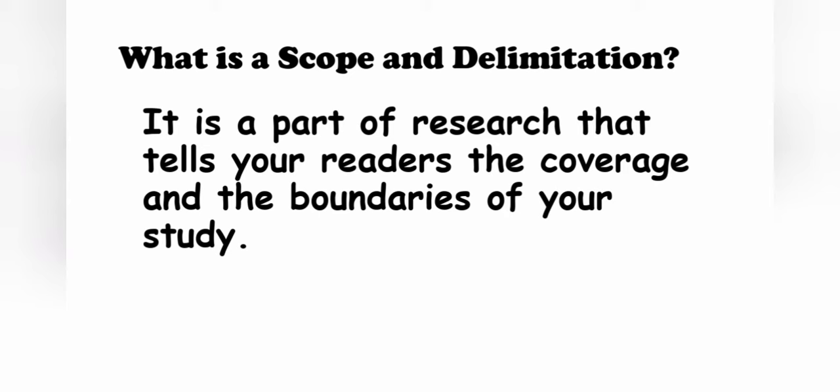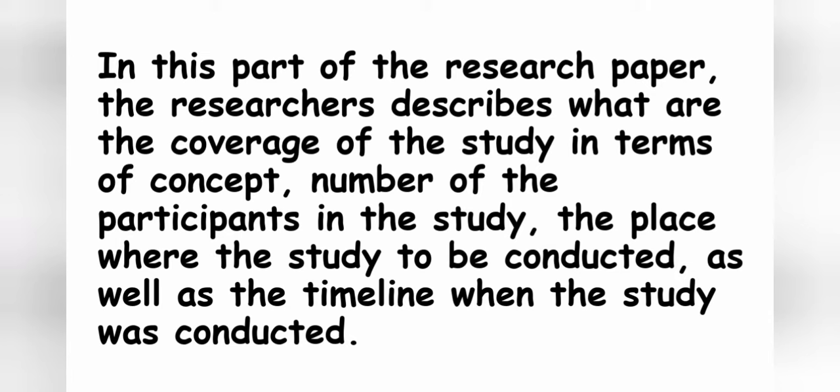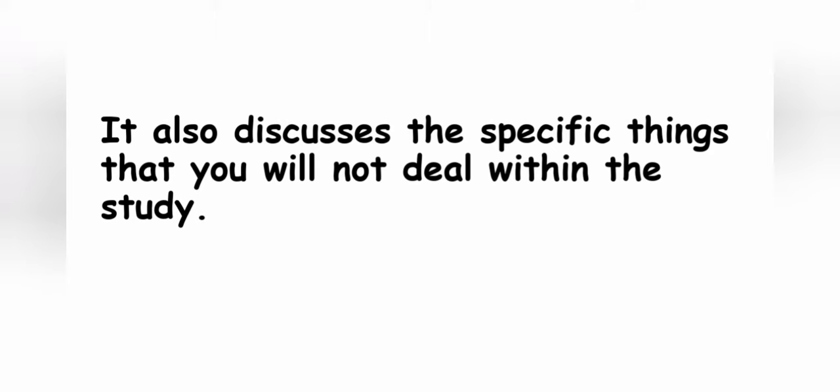What is the scope and delimitation of the study? It is a part of the research paper that tells the readers the coverage and the boundaries of your study. In this part, the researchers describe the coverage of the study in terms of concept, number of participants, the place where the study is conducted, as well as the timeline when the study was conducted. It also discusses the specific things that you will not deal with in the study.